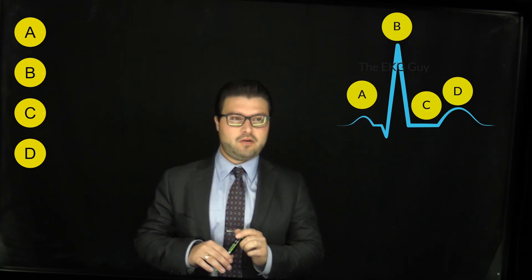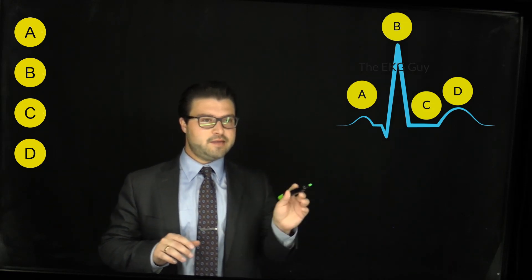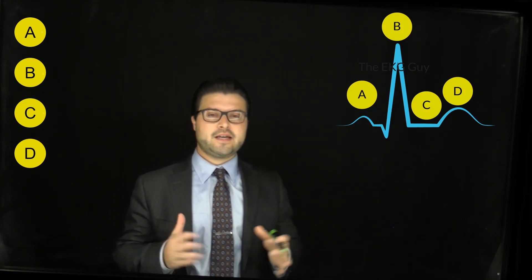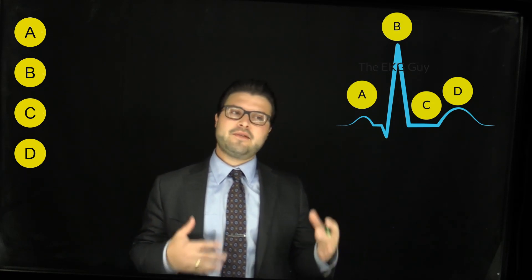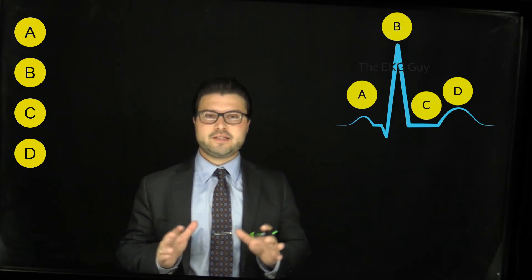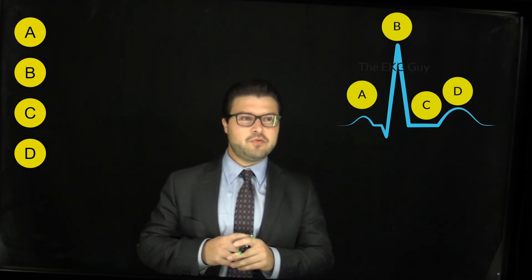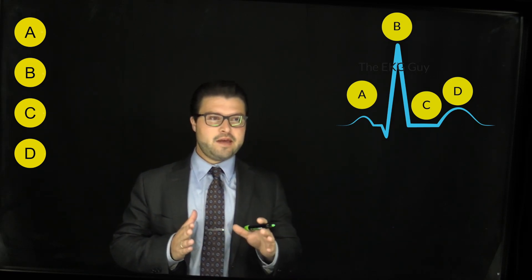This image here is essentially outlining a normal cardiac cycle. Now, not perfectly drawn, but it gets the points that we need to address here. So essentially, let's go from A to D in each one of these.